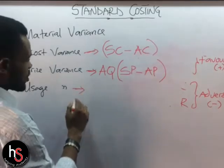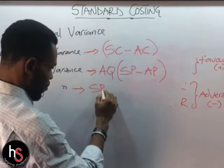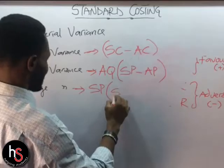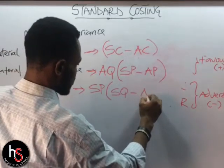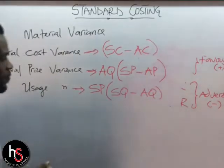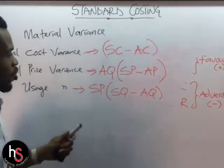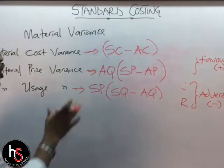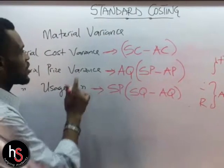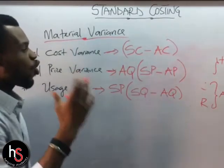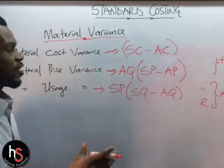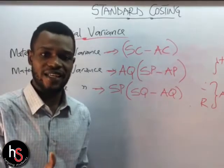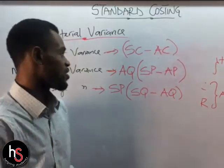For the material usage variance, the formula uses Standard Price × (Standard Quantity − Actual Quantity). Each time you solve a question under material price variance or usage variance, you apply these formulas, as the question will tell you which figures to use.